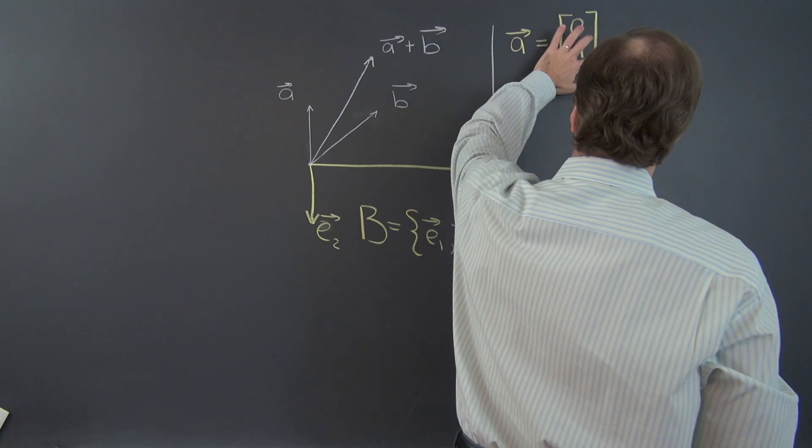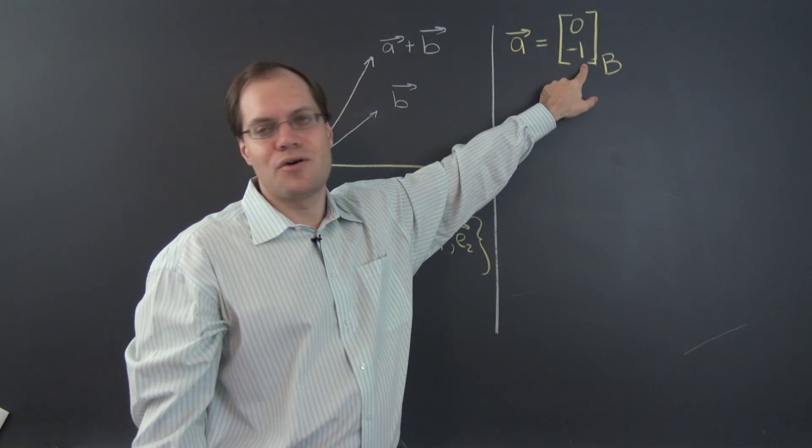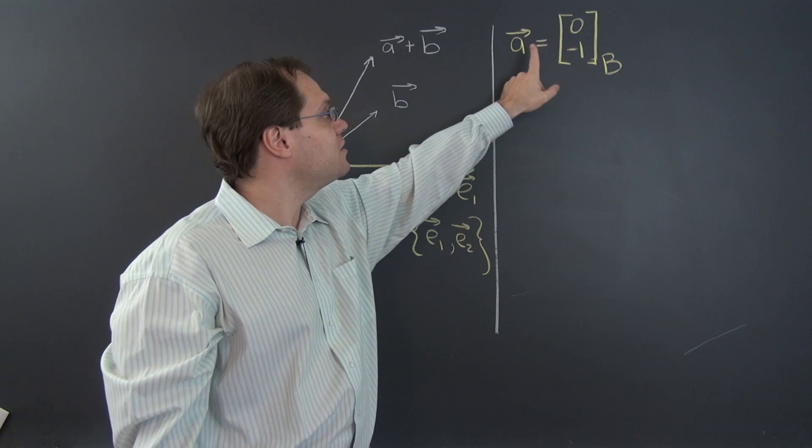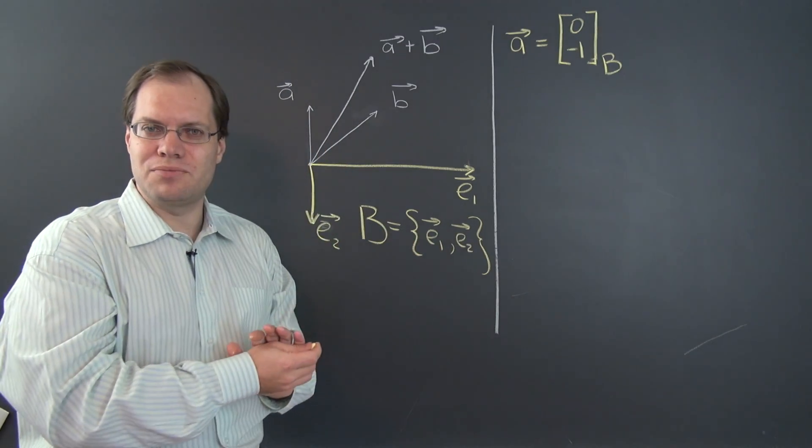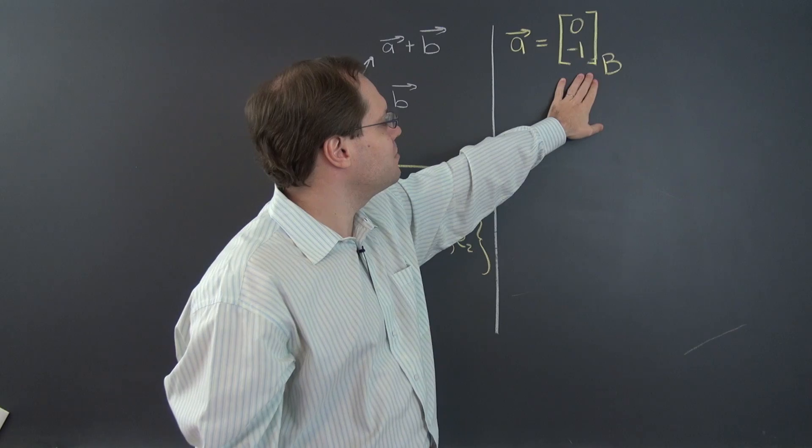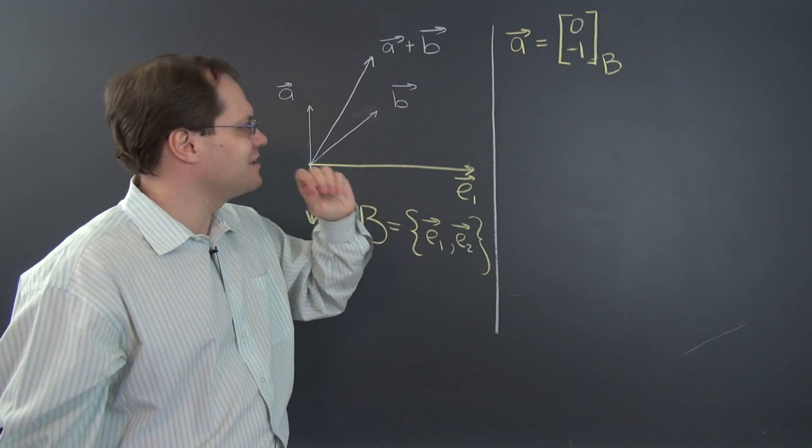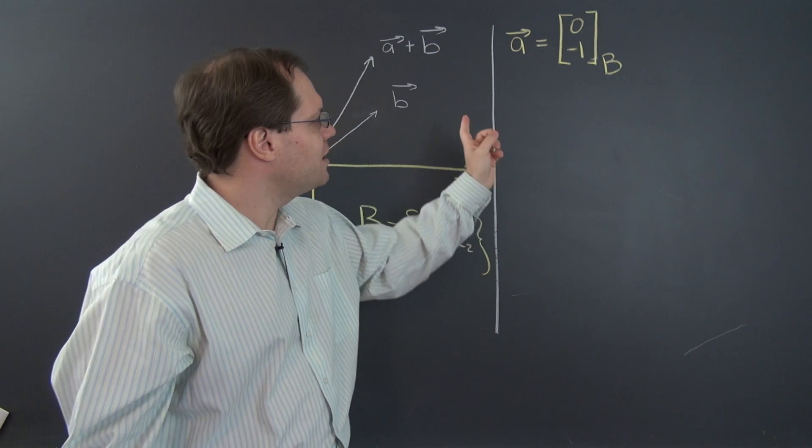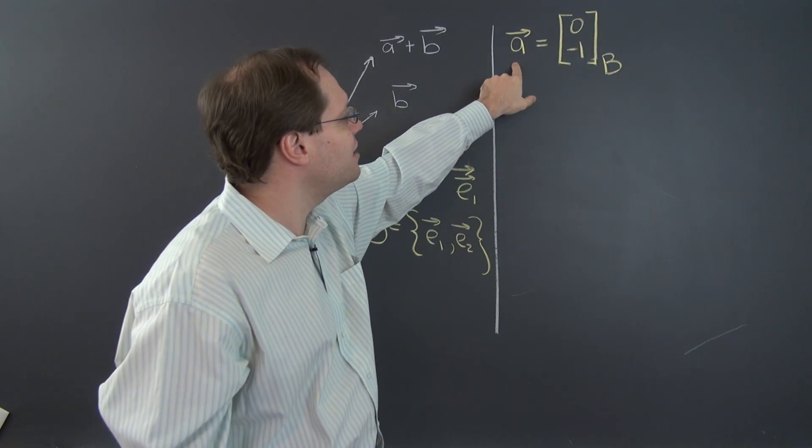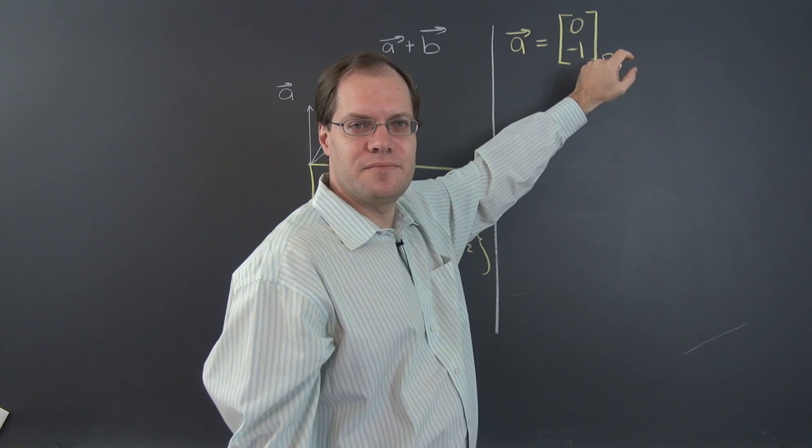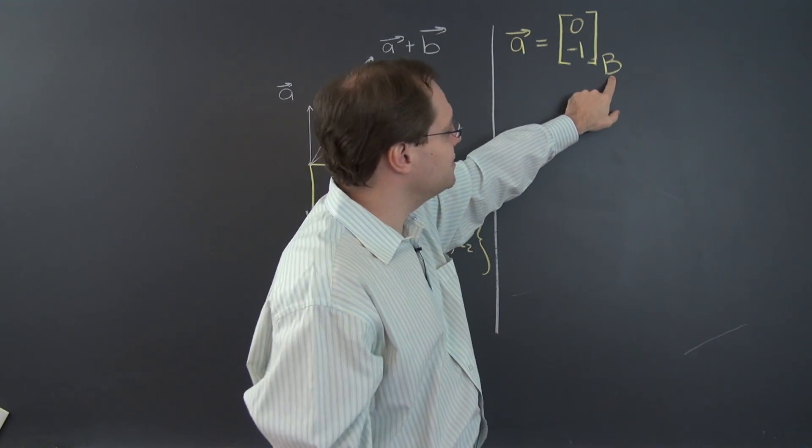Now this may seem a little bit funny, because on the left, we have an arrow. And on the right, we have a pair of numbers. And how can you say that a directed segment, which I've always insisted, is a pure geometric object, no numbers involved, equals a set of numbers? That's like saying cat equals green. You cannot make a cat a color. Two completely different types of things. Well, it's this B that makes it all make sense.